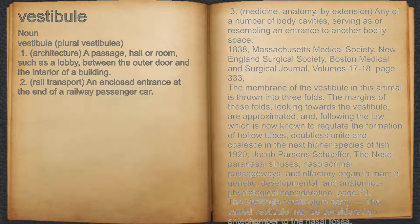Jacob Parsons Schaffer, The Nose, Paranasal Sinuses, Nasolachrymal Passageways, and Olfactory Organ in Man: a Genetic, Developmental, and Anatomico-physiological Consideration, p. 73: "The vestibule, vestibulum nasi. The paired vestibule may be considered an ante-chamber to the nasal fossa."